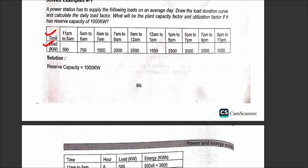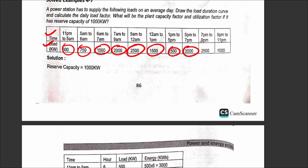Looking at the table, the time periods and corresponding loads are listed. The time period from 11 PM to 5 AM has the minimum load. The load values in kilowatts are given for each time period across the day, and we need to process these to find the required factors.